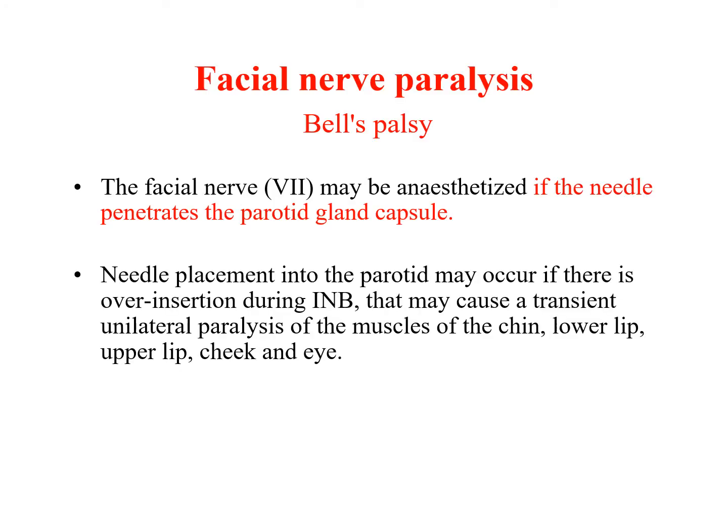Next is facial nerve paralysis. It occurs when anesthesia is introduced into the deep lobe of the parotid gland. The needle may enter the parotid if there is over-insertion during the inferior alveolar nerve block due to wrong technique. This may cause transient unilateral paralysis of the muscles of the chin, lower lip, upper lip, cheek, and eye — which can appear alarming.